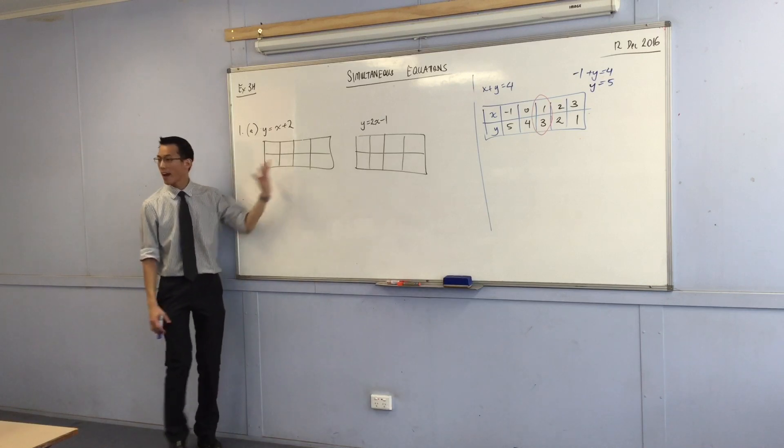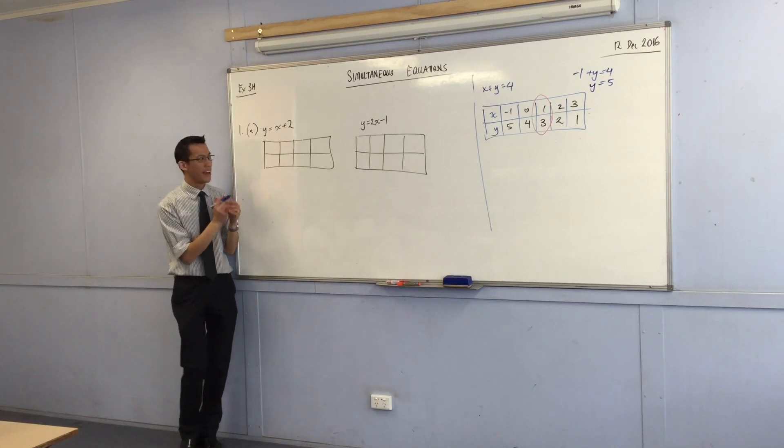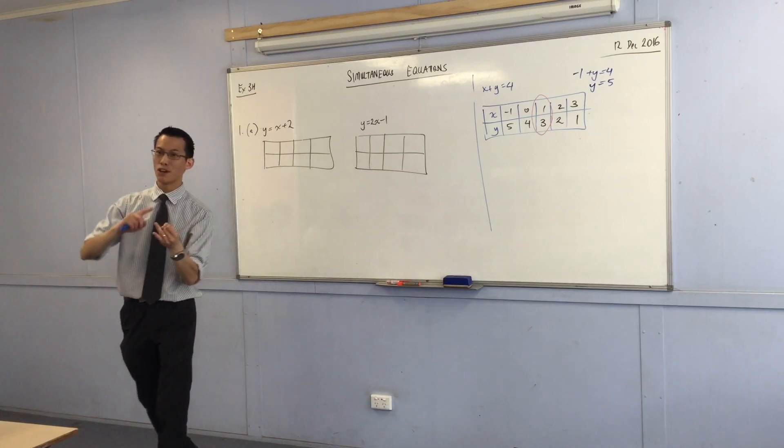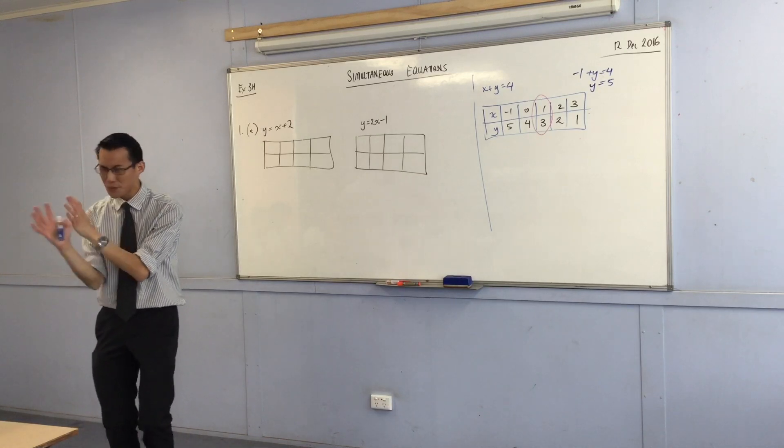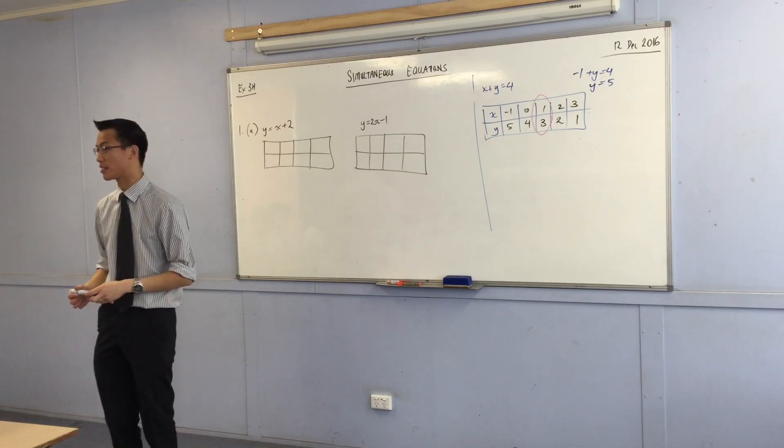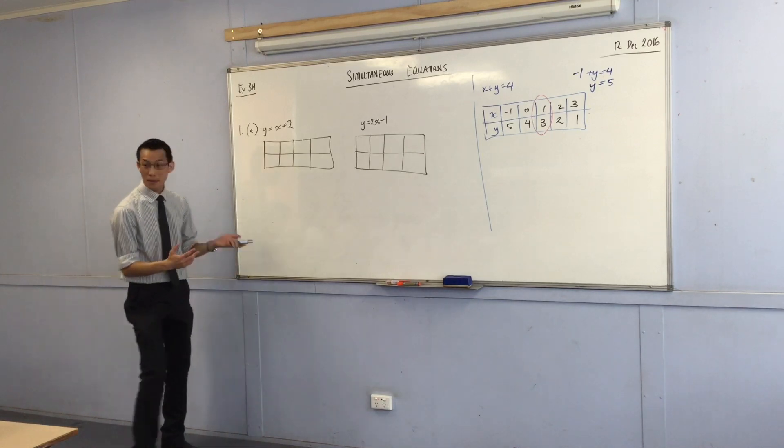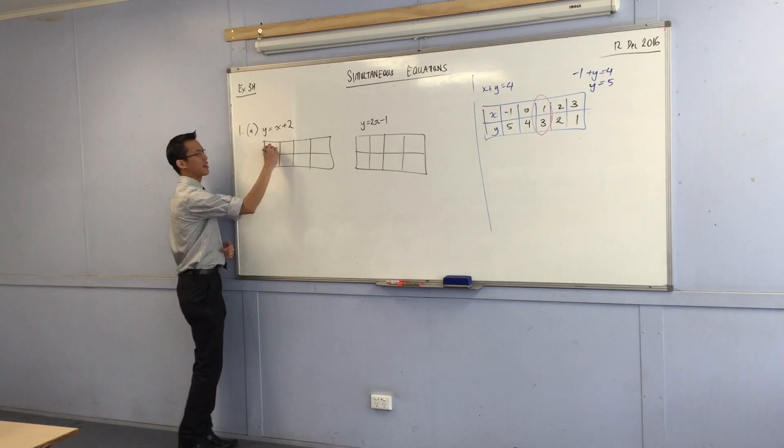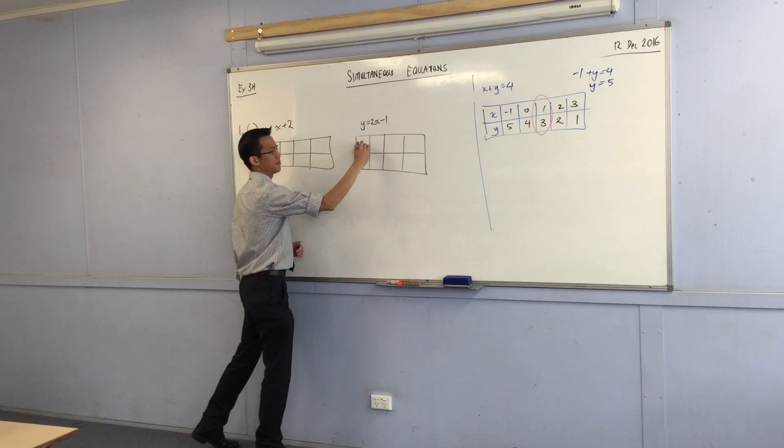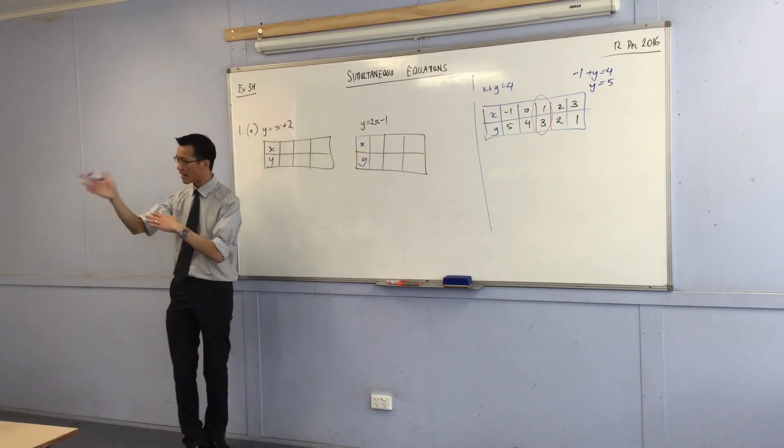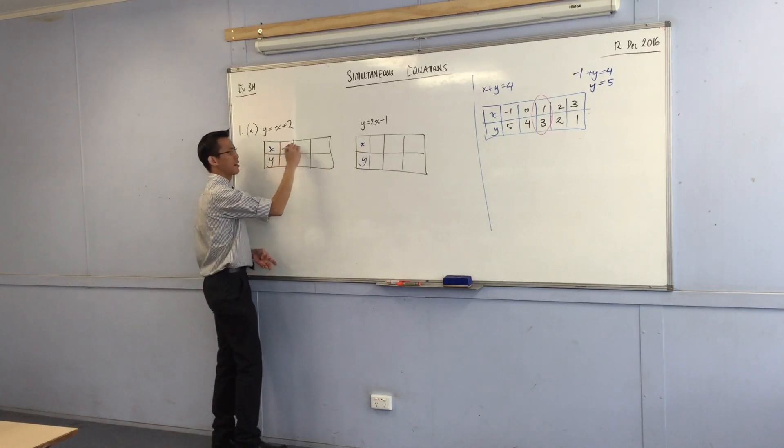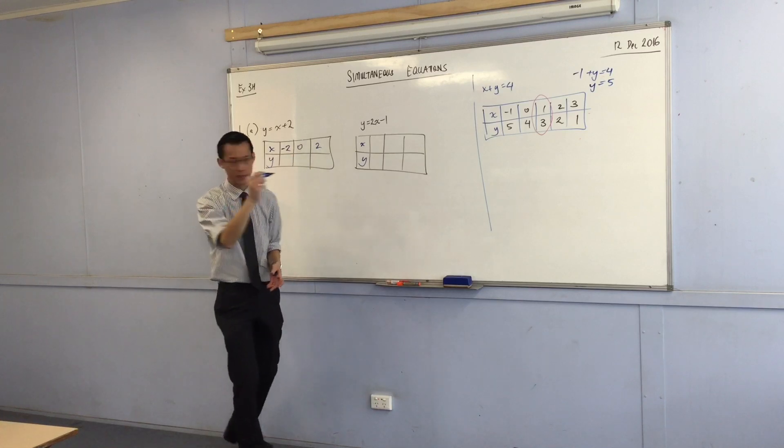So, this way of solving things with a picture helps us because, number one, pictures are cool. Number two, you don't have to predict where exactly the solution is going to be. The picture will tell you. So, to begin, let's actually just go with the values they've suggested, which is from negative two to two.